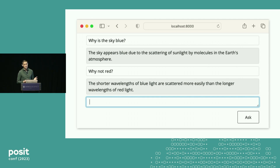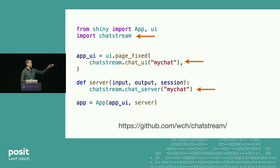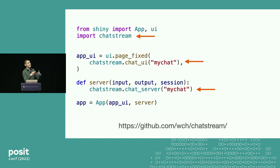To create this application, it's really simple. We've got the normal Shiny stuff — there's the UI and server parts of the app. We say chatstream.chat_ui and give it an ID, in this case "my_chat." Then in the server part, we say chatstream.chat_server, my_chat. And that's all you need to do — well, you also need to get an API key. But those are the things you need to make that simple application.